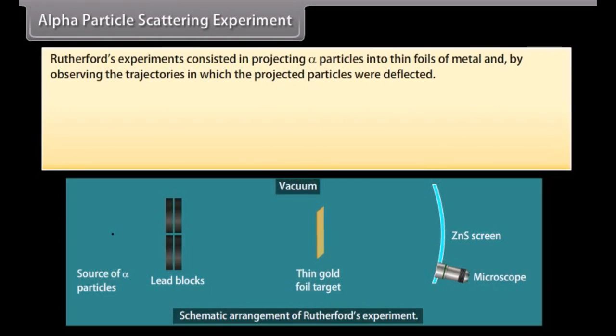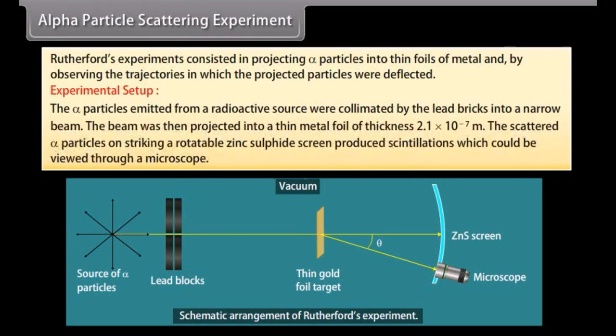Alpha particle scattering experiment. Rutherford's experiments consisted in projecting alpha particles into thin foils of metal and by observing the trajectories in which the projected particles were deflected. Experimental setup: The alpha particles emitted from a radioactive source were collimated by the lead bricks into a narrow beam. The beam was then projected into a thin metal foil of thickness 2.1 into 10 raised to the power minus 7 meter. The scattered alpha particles on striking a rotatable zinc sulfide screen produced scintillations which could be viewed through a microscope.